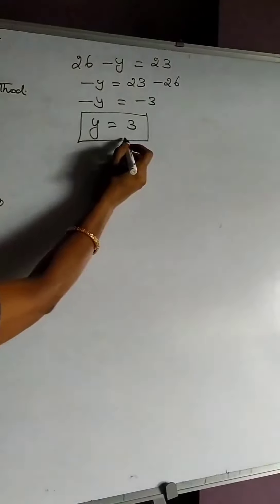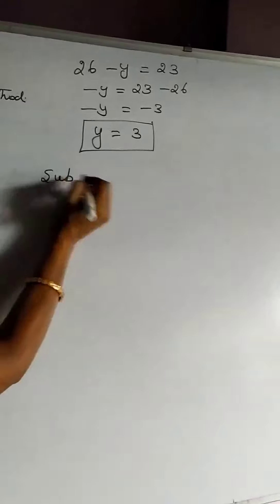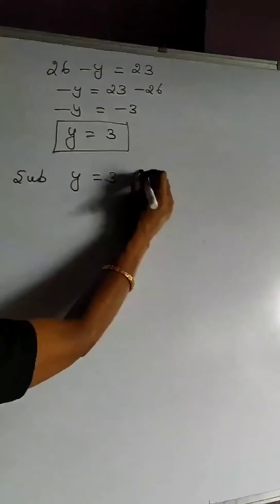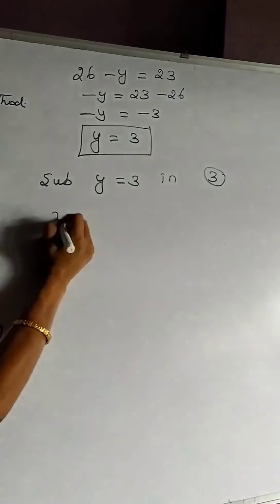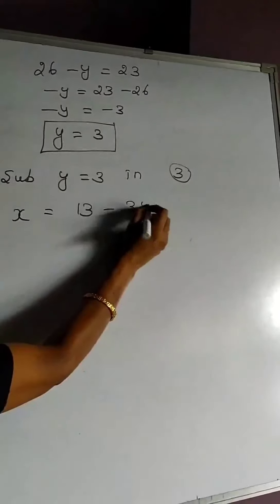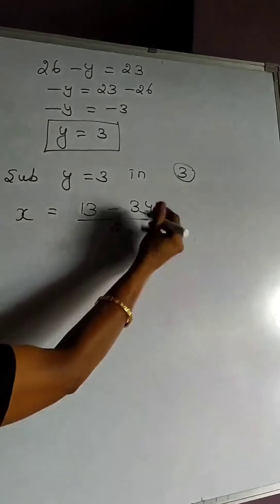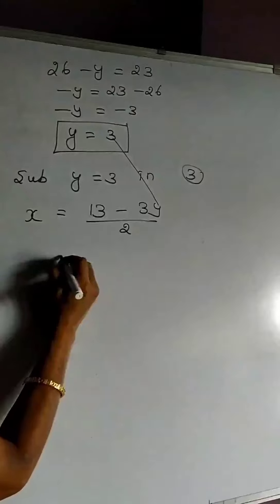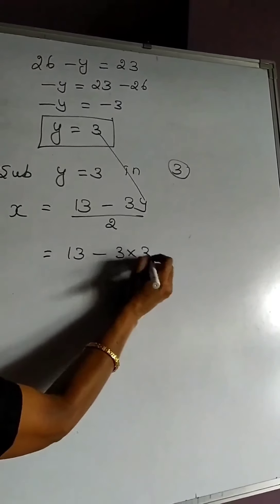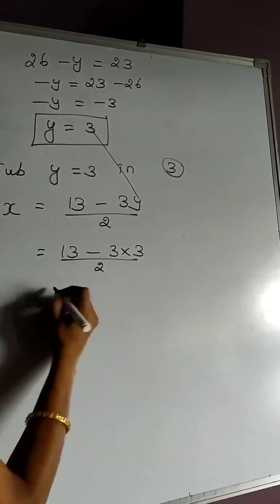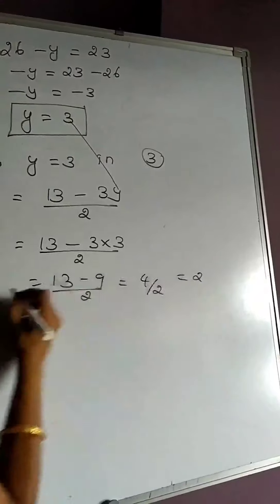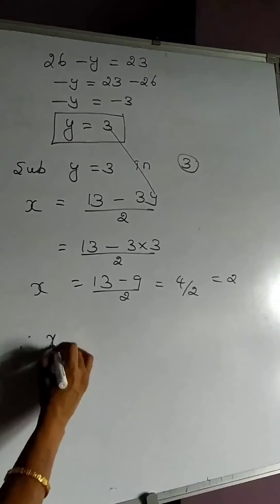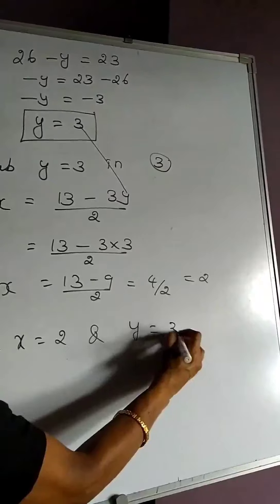So y = 3 is going to be substituted in the third equation. Substituting y = 3 in the third equation: x = (13 − 3y) / 2. In the place of y we substitute 3, so it is (13 − 3 × 3) / 2 = (13 − 9) / 2 = 4/2 = 2. Therefore we got x = 2 and y = 3.